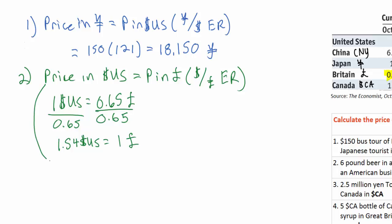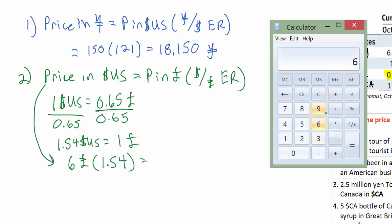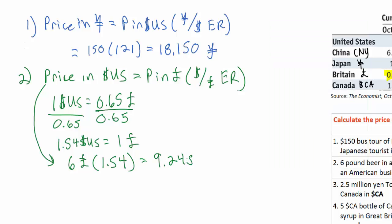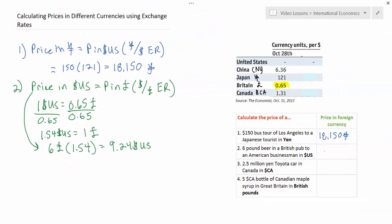So we know that 1.54 US dollars equals 1 British pound. Now we can find the price in US dollars by multiplying the price in pounds — 6 pounds — by the dollar-per-pound exchange rate of 1.54. Multiplying 6 pounds by 1.54 gives us a price of $9.24 US. A 6-pound beer in a British pub is the equivalent of $9.24 US.